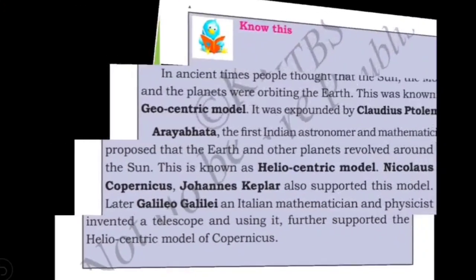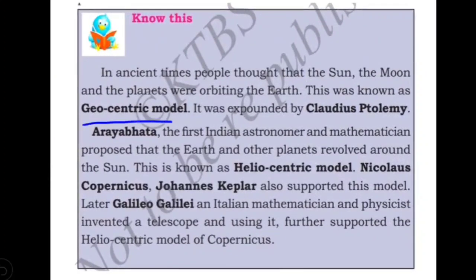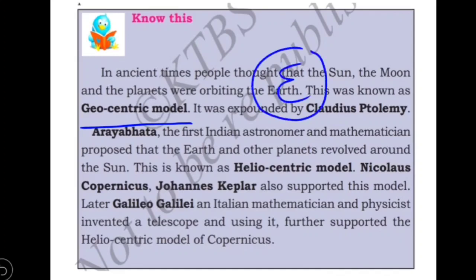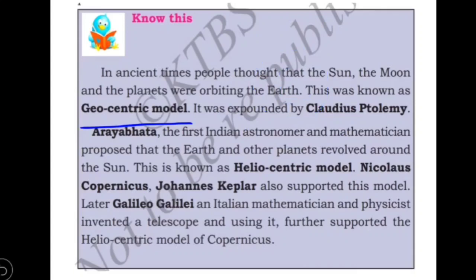The next concept is the geocentric model and the heliocentric model. In ancient times, people thought the sun, moon, and other planets orbit around the Earth — the Earth was considered constant. This view was put forward by Claudius Ptolemy and is called the geocentric model, where the Earth is stationary and the sun, moon, and other planets revolve around the Earth.